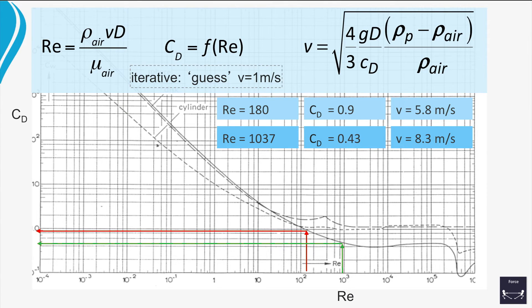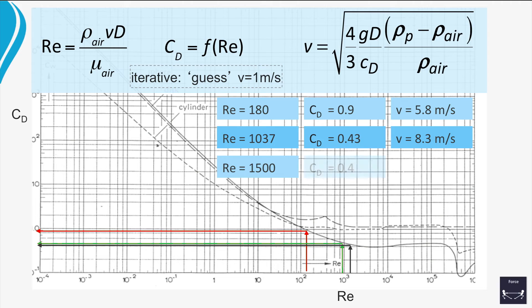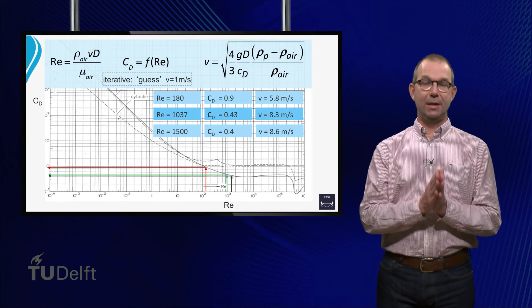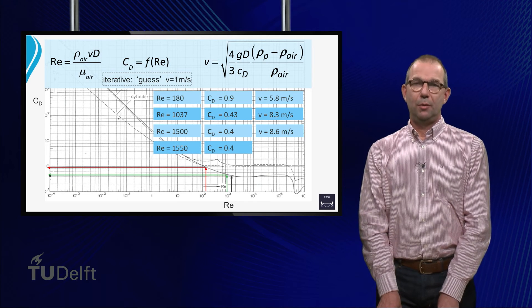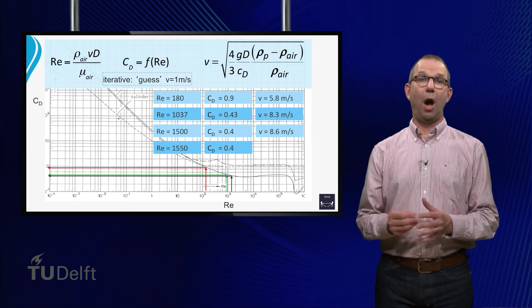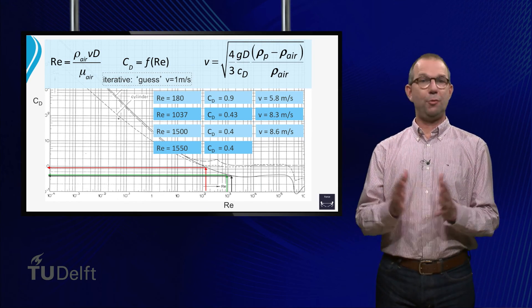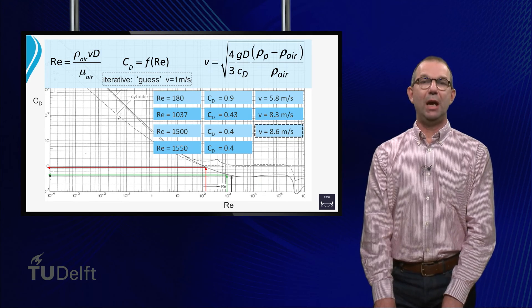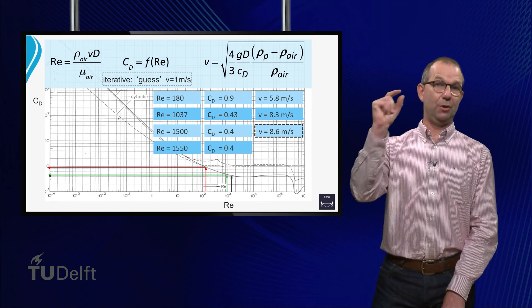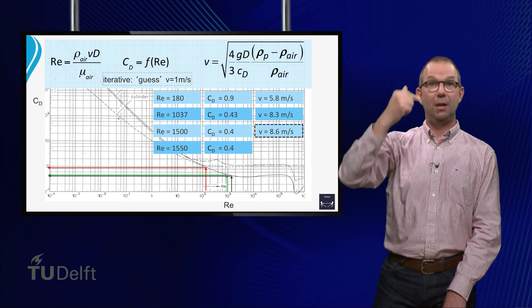This gives another update for the velocity: V equals 8.3 meters per second. The cycle repeats: we compute Reynolds and get 1500, read the graph, and find CD is 0.4. We compute V and find V equals 8.6 meters per second. Recalculating with this velocity we find Reynolds equals 1550; reading the graph we again find CD is 0.4 — the same as in the previous iteration. Hence we can conclude V equals 8.6 meters per second. The velocity of a hailstone of 3 mm coming down on our heads is 8.6 meters per second.